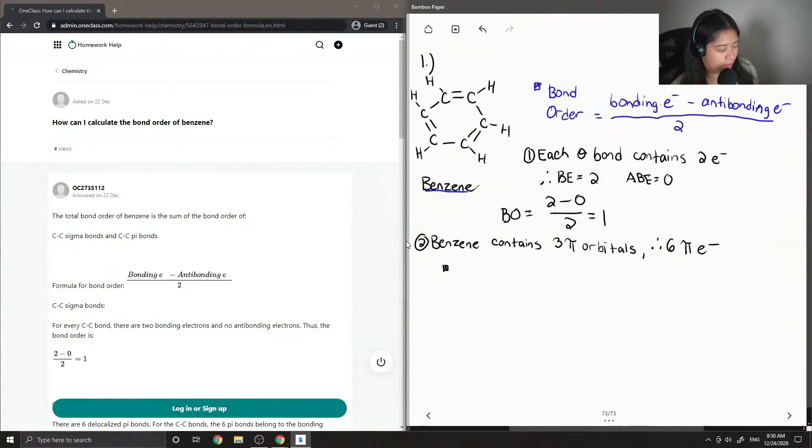Okay, so let me write down the bonding order of the total pi bonds in the molecule. The bond order of three is for the total pi bonds. But for each pi bond, I'm going to divide the three by six, since there are six pi electrons.